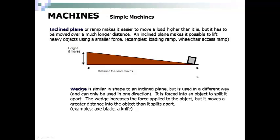A wedge is similar in shape to an inclined plane, but it can be used in a different way, and it can only be used in one direction. It is forced into an object to split it apart. Wedges increase the force applied to an object, but it moves a greater distance into the object than it splits apart. An example of a wedge is an axe or a knife. Here is a picture of a wedge. You can see that the wedge is being forced into this block.